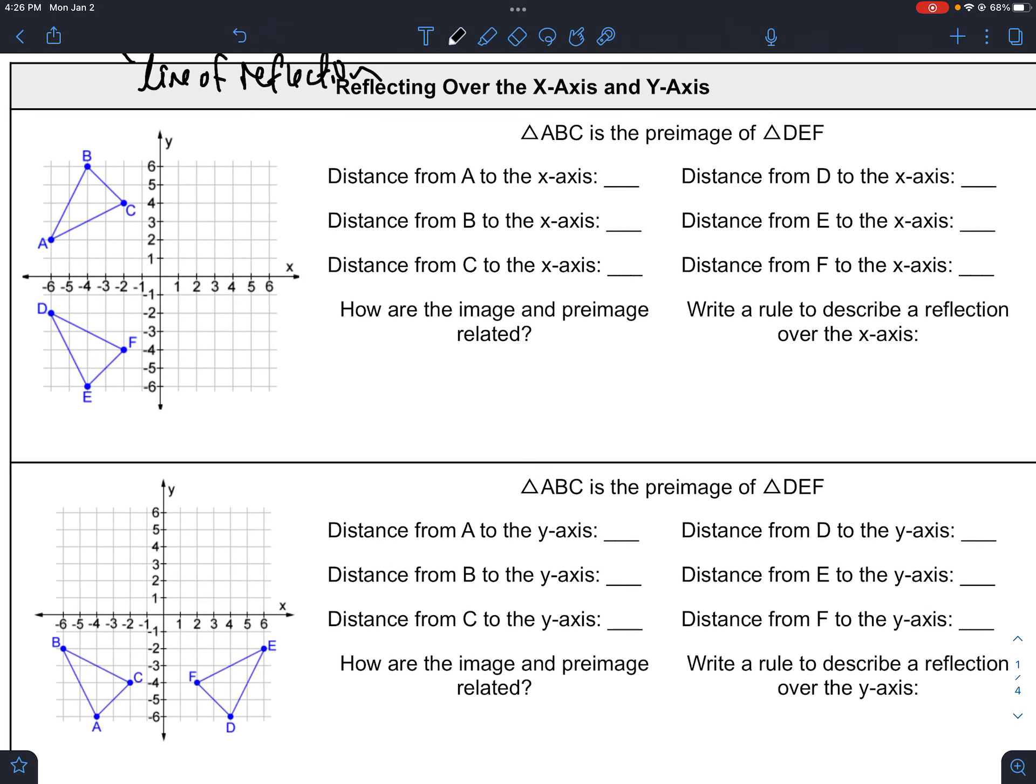So first, let's just try and do some observation about reflections that happen over the x and y axis. So here, how far is A from the x-axis? Well, it's 2, right? And how far is D from the x-axis? Also 2. And that equality should be preserved for all the points. B is 6 away, and so is E. And C is 4 away from the x-axis, and so is F.